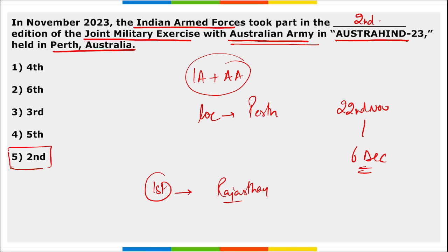One more thing that can be asked: from the Indian side, which battalion took part? It was the Gorkha Rifles Regiment — the Gorkha Rifles Regiment took part in this Austrahin exercise, which was the second edition.